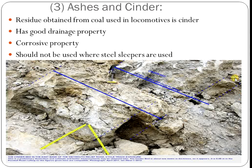The third type is ashes and cinder. The residue obtained from coal used in locomotives is called cinder. It has good drainage property. However, due to its corrosive property, it should not be used where steel slippers are used. This type of ballast is used at locomotive yards or locomotive sections.